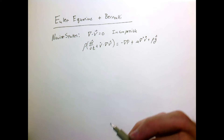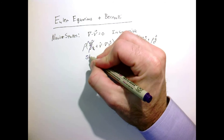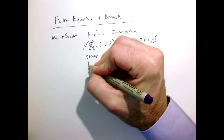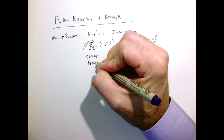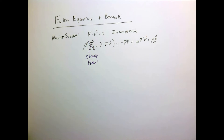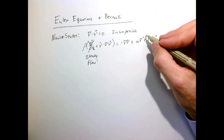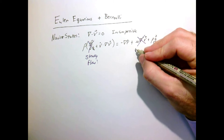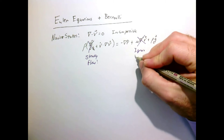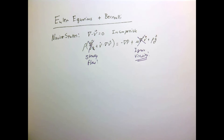First, we'll make an assumption which isn't very restrictive: we're only interested in steady flow, or flows that are not changing in time. So we can get rid of the time derivative from our equation. The next assumption is much more restrictive and actually somewhat non-physical, which is that we're going to ignore viscosity.